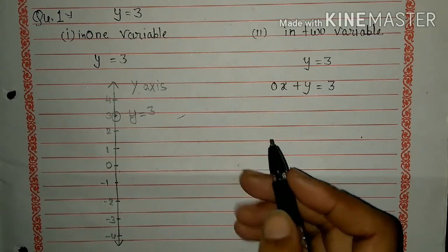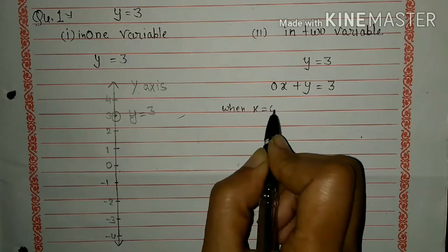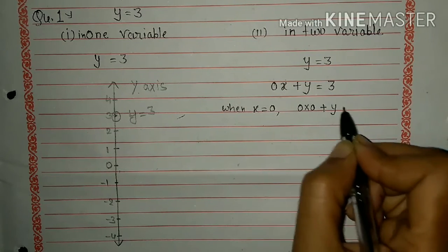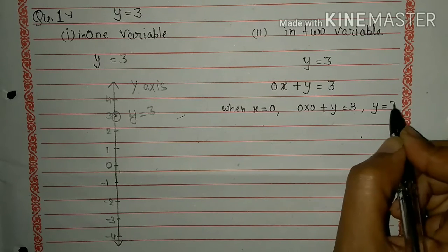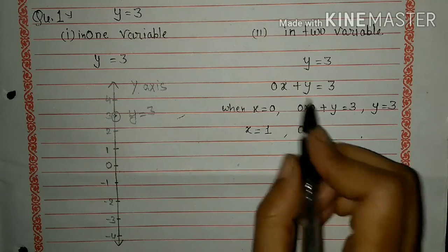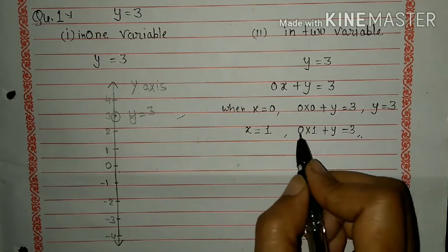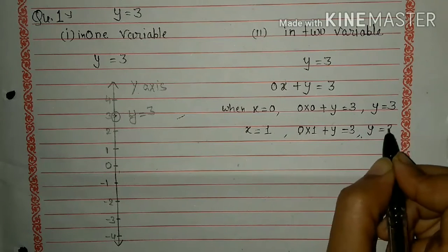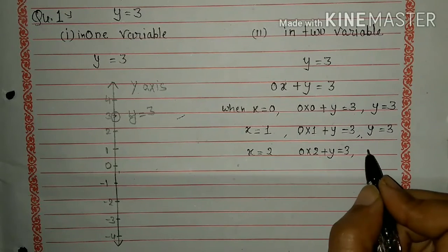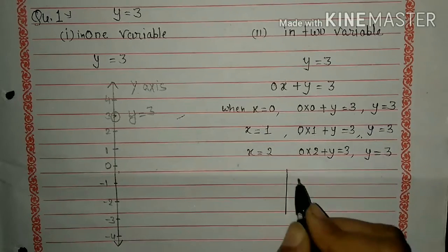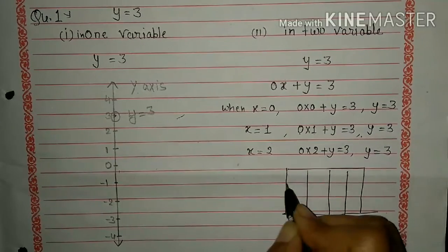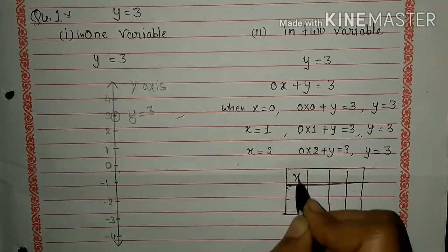y=3. So here y=3. If we put x=0, so here you see 0×0 + y = 3, so here y=3. Here 0×1 in place of x we put 1 plus y=3. Here you see 1×0 is 0, so again y=3. Again x=2, so 0×2 + y = 3, so here also y=3. So our coordinates are x and y.